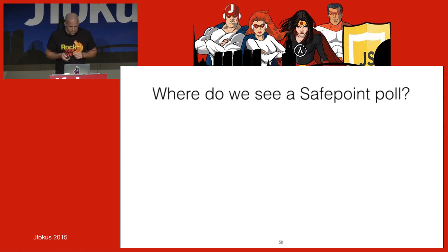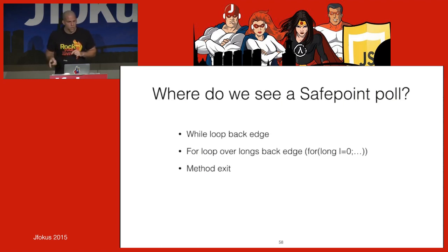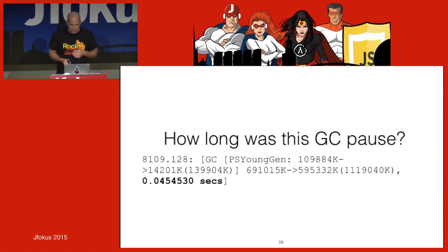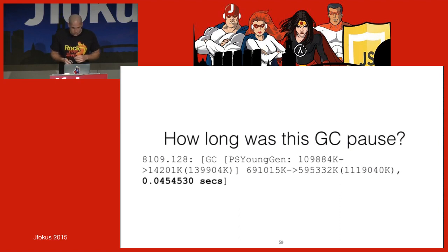Safe points appear at while-loop back edges, in loops over longs but not ints, and at method entry or exit depending on the JVM. They're not everywhere — we don't check constantly. So when the JVM asks for a stop-the-world, how long was the GC pause? It should be whatever the GC log says — say 45 milliseconds — but it's potentially much more than that.